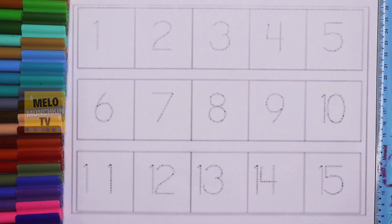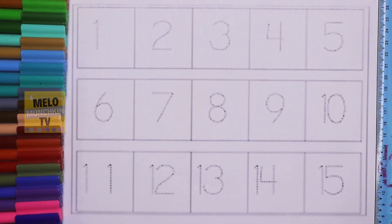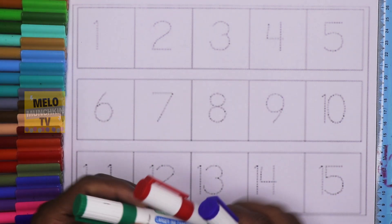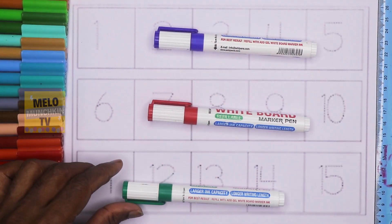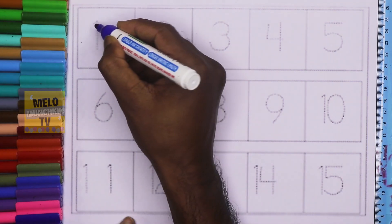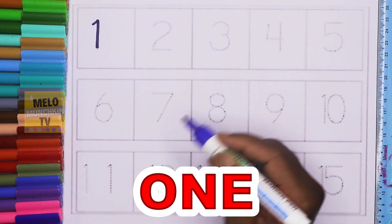Hello kids, today we'll learn numbers from 1 to 15. Let's get started. I'll use these three colors to complete the numbers. First, blue color. This is 1, o-n-e, one. This is 2, t-w-o, two.